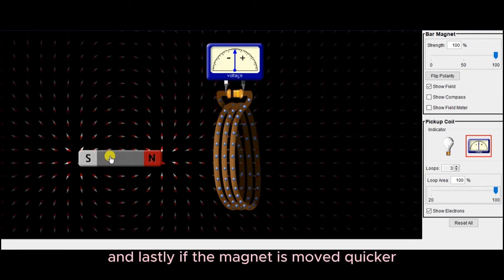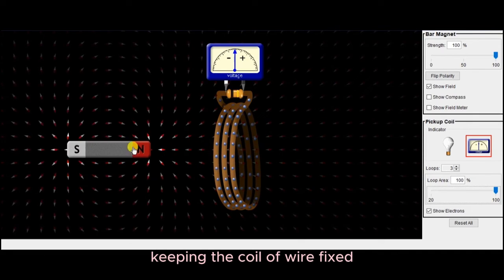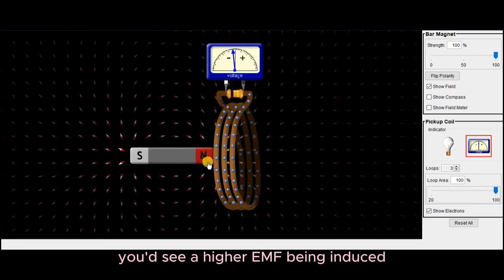And lastly, if the magnet is moved quicker, keeping the coil of wire fixed, you'd see a higher EMF being induced.